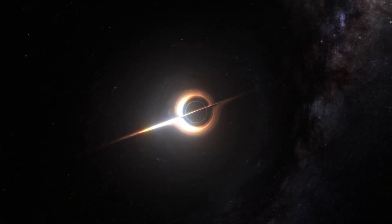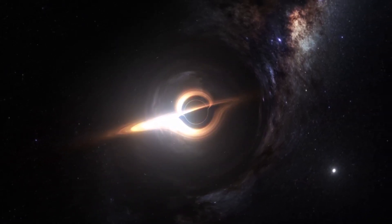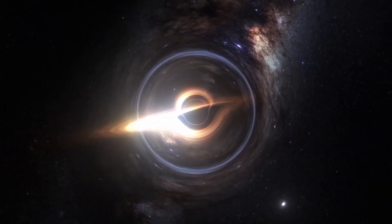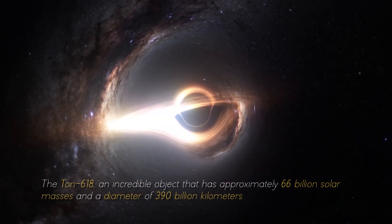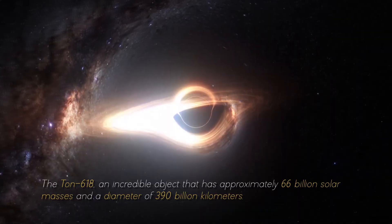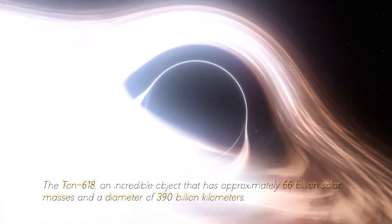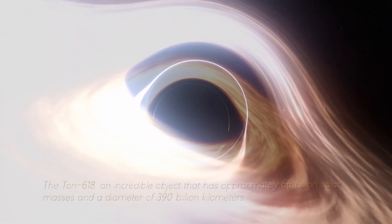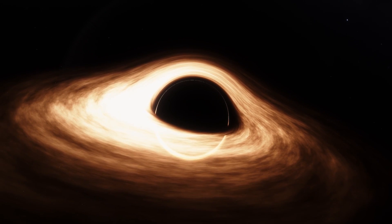Not everything ends here. This star cannot be compared with the most massive black hole in our cosmos, the Ton 618, an incredible object that has approximately 600 billion solar masses and a diameter of 390 billion kilometers. For now, we will stop measuring in kilometers and start measuring in light years.